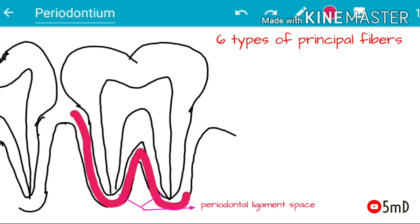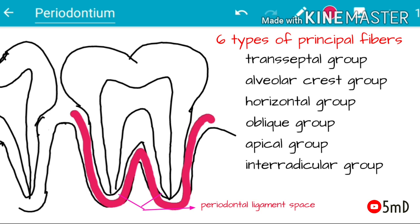The six types of principal fibers are: the transeptal group, alveolar crest group, horizontal group, oblique group, apical group, and interradicular group.